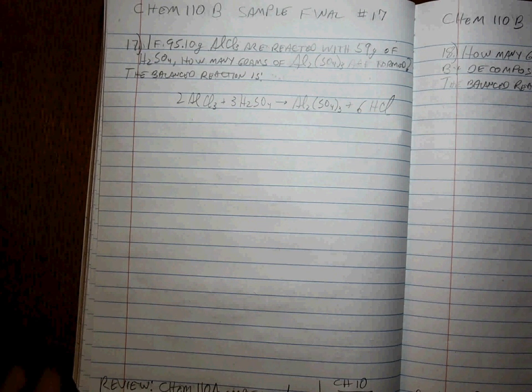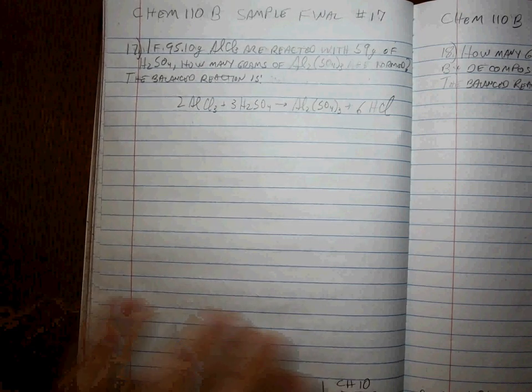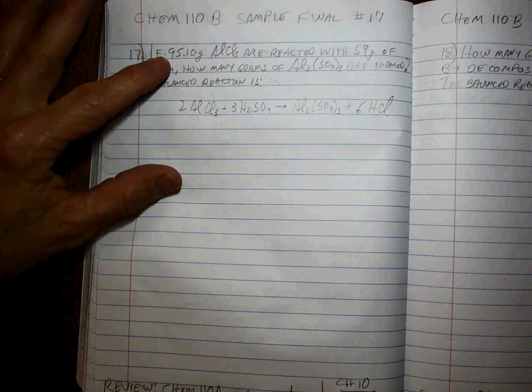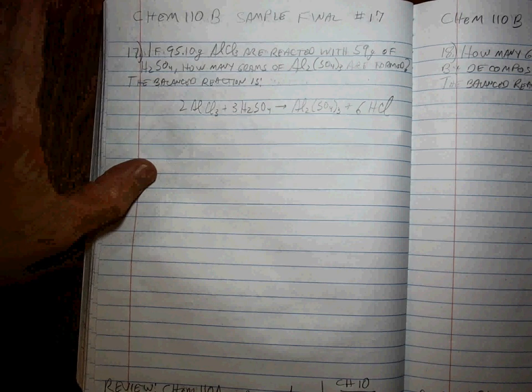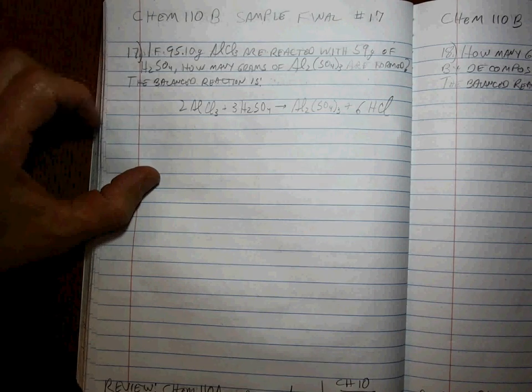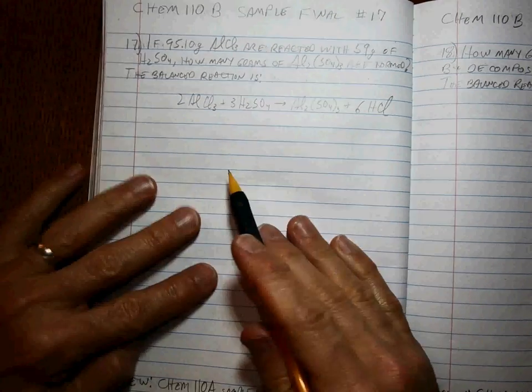Sample final number 17 from your Chem 110B sample final sheet. If 95.10 grams of aluminum chloride are reacted with 59 grams of sulfuric acid, H2SO4, how many grams of aluminum sulfate are formed?